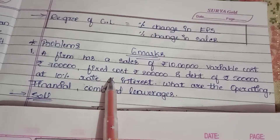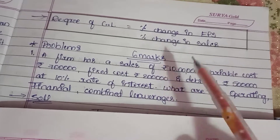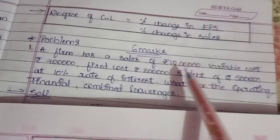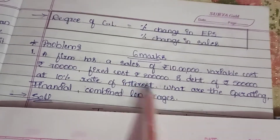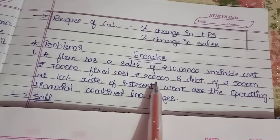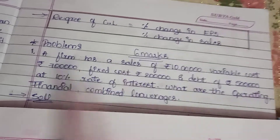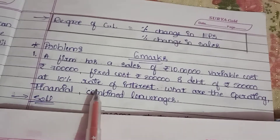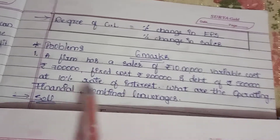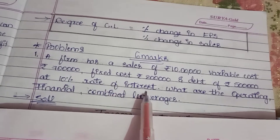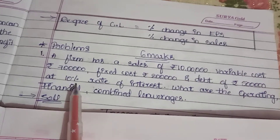Fixed cost is fixed — it is stable. Variable cost changes with units of sales. Fixed cost is 2 lakhs. Debt of 5 lakhs at 10% debentures. Debenture of 5 lakhs at 10% rate of interest.